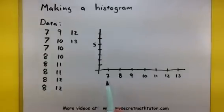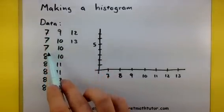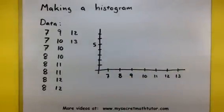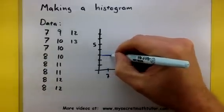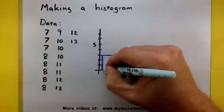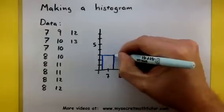How many 7s do we have? Looks like we have 1, 2, 3. So in my 7 category, I will create a bar that goes up to 3. Just like that.